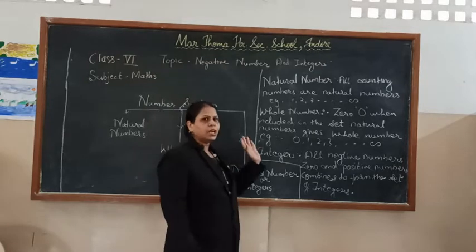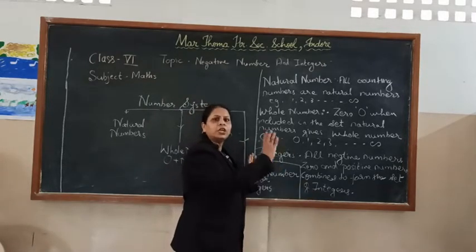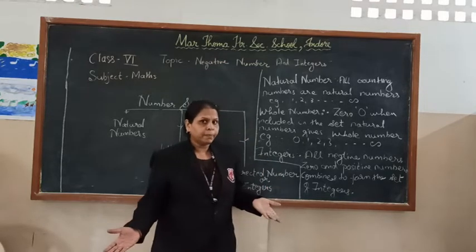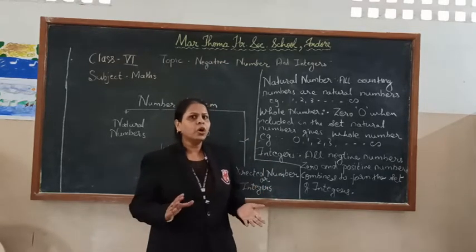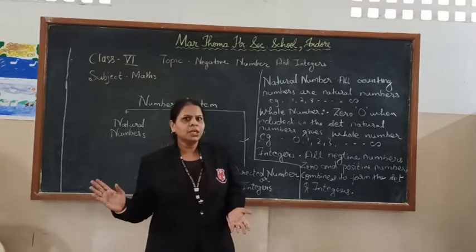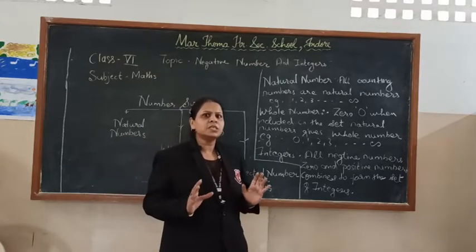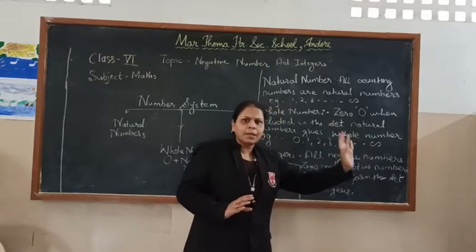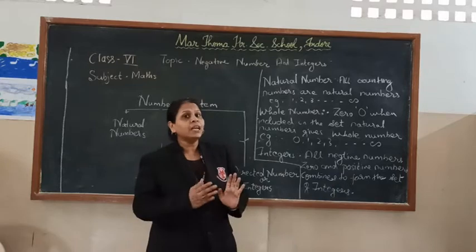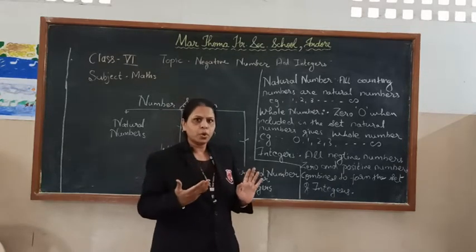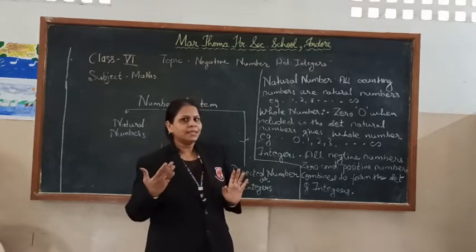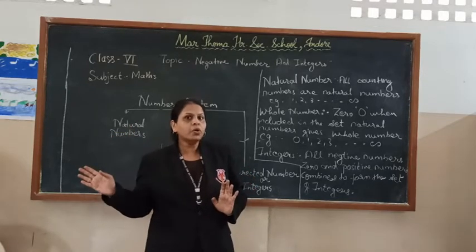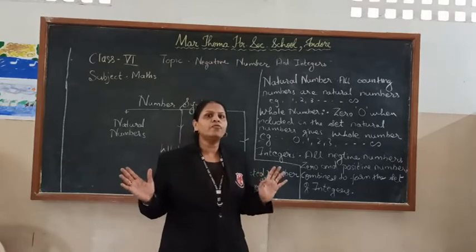All numbers coming to the right-hand side of zero are the set of positive numbers. These negative numbers come on the left-hand side of zero. Just as in the number system we write 1, 2, 3, 4 up to infinity on the right, similarly, negative numbers are written from the negative side: minus 1, minus 2, minus 3, minus 4, and this continues up to minus infinity.